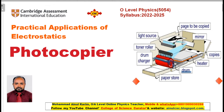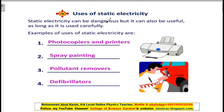We place the original page to be copied on the glass sheet. Static electricity can be dangerous but also useful when used carefully. Examples of uses of static electricity include photocopiers and printers, spray painting, pollutant removers, and defibrillators.